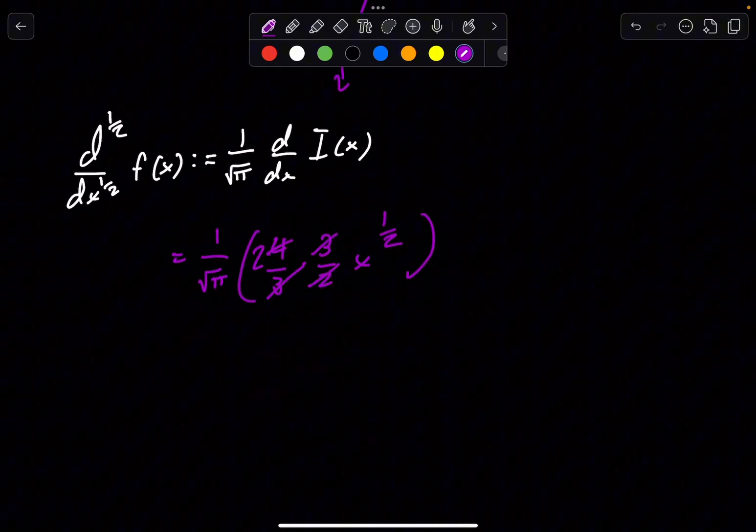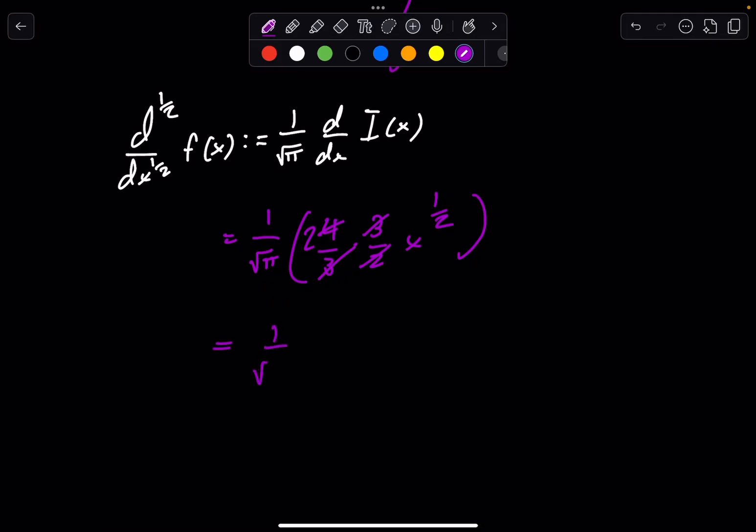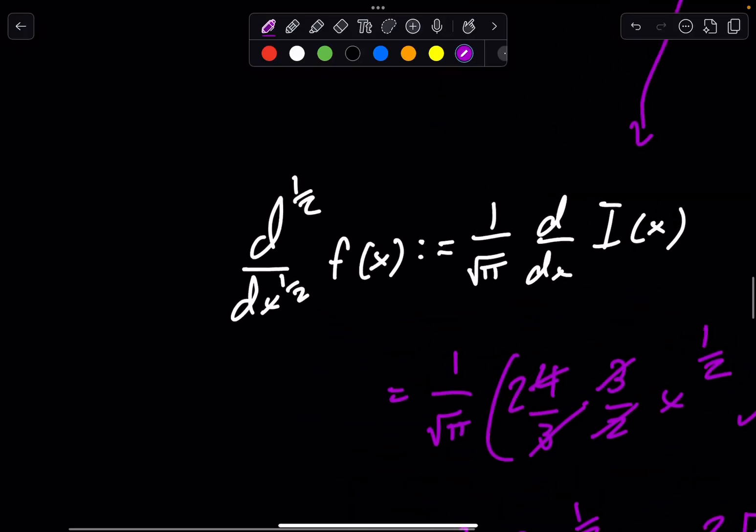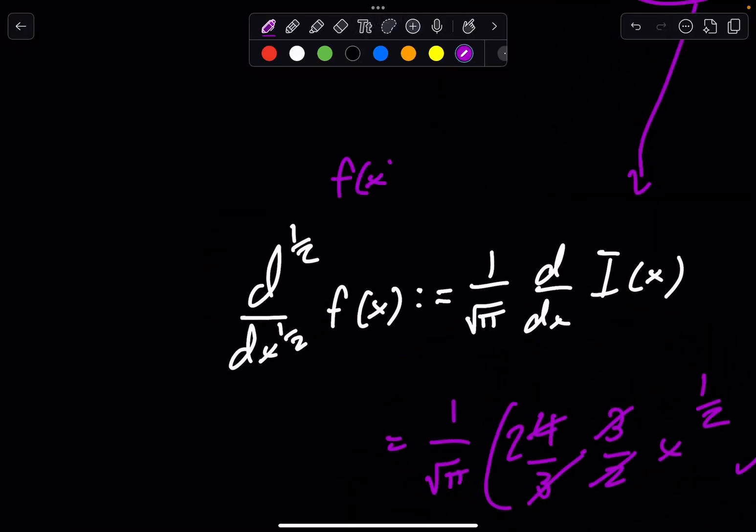3 and 3 cancel, this cancels into 2. You have 1 over √π of 2x to the 1/2. Simplifying things, and you get, ladies and gentlemen, you get 2√x over √π. That is our answer to the half derivative of x, where f(x) right now is equal to x.